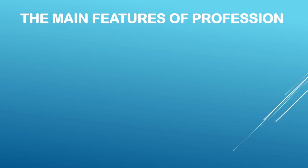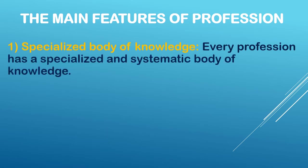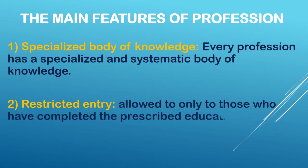Now let us look into the main features of profession. First, specialized body of knowledge — every profession has a specialized and systematic body of knowledge. As we said, a profession requires specialized knowledge and skill: for doctors it is knowledge of medicine, for chartered accountants it is knowledge of accountancy, and so on. Each profession has its own systematic body of knowledge.